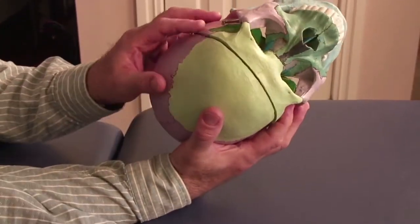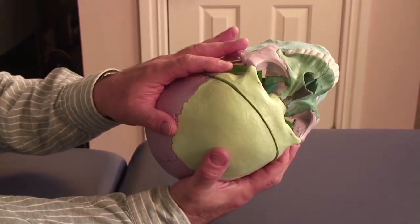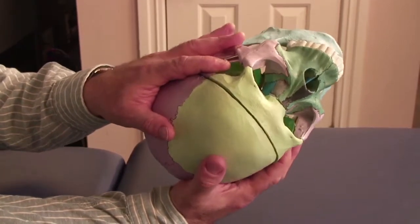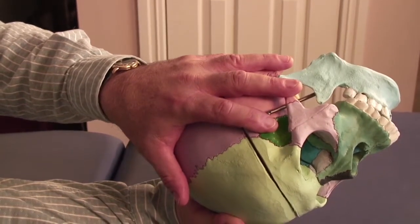Again, on the other side, index finger on the greater wing of the sphenoid, zygomatic arch of the temporal bone, and the mastoid process with the ring finger, and the pinky is on the occipital bone.